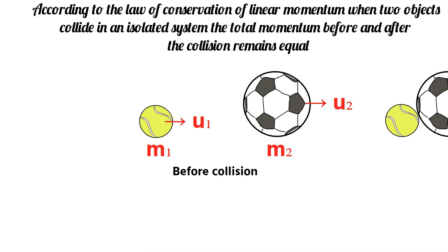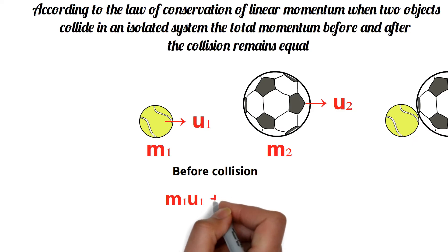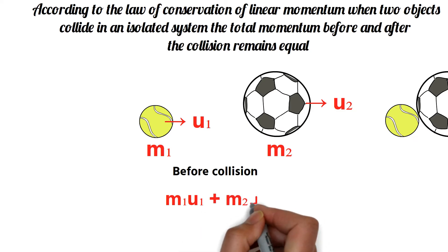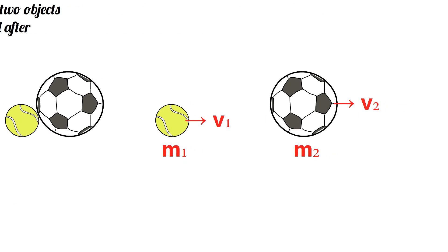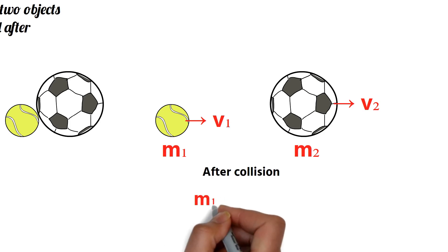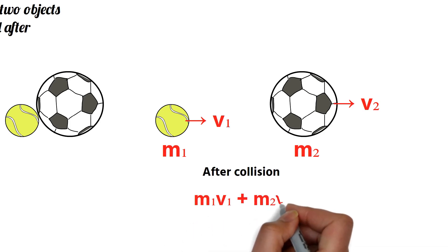Before collision, the total momentum of these two balls is M1U1 plus M2U2. And after collision, the total momentum of these two balls is M1V1 plus M2V2.